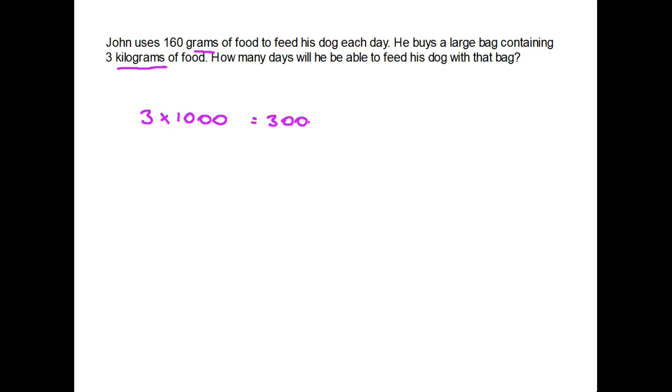Now that we have that figure, three thousand grams, we can divide that by the number of grams that he needs each day. You would have a calculator to help you do this. The answer in this case is 18.75. Now what this means is that he has enough food to feed the dog for 18 days and he would have a little bit left over, but he hasn't enough for 19 days.